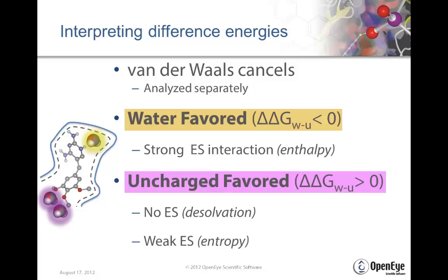Where the uncharged probe is favored — where the free energy difference is positive — we have either no electrostatics, so the energy is driven by a desolvation penalty, or just weak electrostatic interactions. This typically gives rise to an entropy difference.